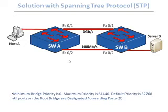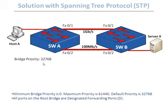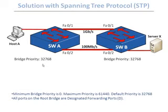This switch is called the root bridge, and it is selected as the switch with the lowest bridge priority. Every switch has a bridge priority, and the default priority is 32,768. You can change this value by altering the configuration, thus altering the root bridge election and your entire loop-free topology.